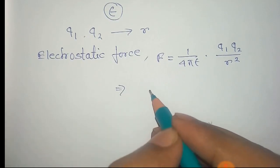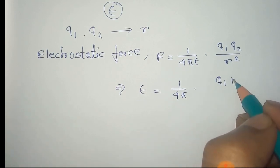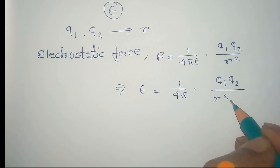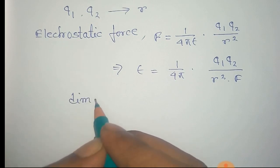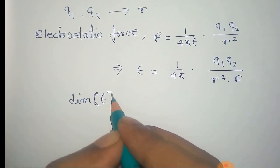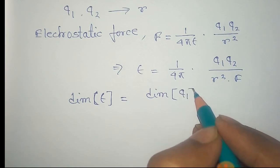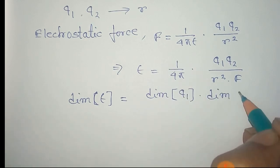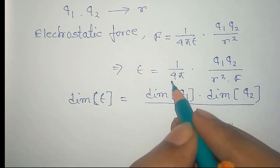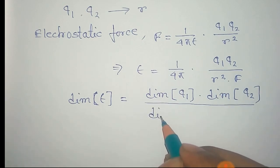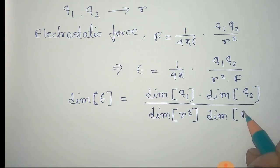From this, we have to find the dimension of epsilon. So epsilon is equal to 1 by 4 pi into q1 q2 by r square into f. Now the dimension of epsilon equals the dimension of q1 into dimension of q2 — 4 pi is a dimensionless quantity so there is no dimension — divided by dimension of r square and dimension of force, that is f.